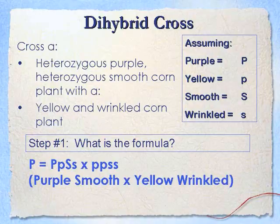Our formula will be big P, little p — that is heterozygous purple, meaning it has two different alleles, the dominant and the recessive — with heterozygous smooth, big S, little s. Again, heterozygous means two different types of allele, a dominant and a recessive. The other parent is yellow and wrinkled corn. If it's yellow and wrinkled, we know it has to be homozygous recessive, so little p, little p and little s, little s.